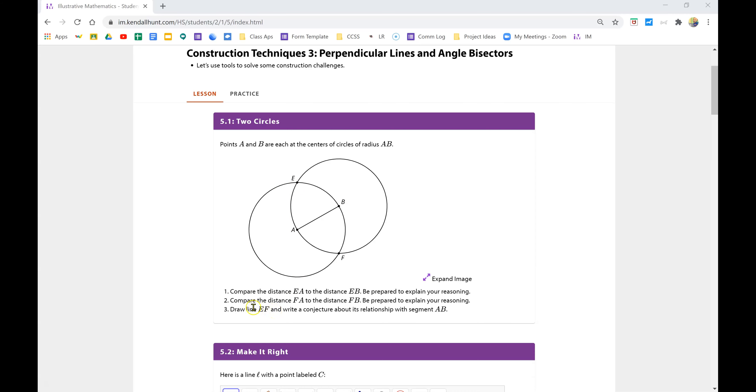So how do they compare? I'll leave that for you to answer. Same question number two: compare the distance FA to the distance FB. Very similar answer. And then draw the line EF and write a conjecture. If we draw the line EF, what does that do to the segment AB? How does it cross it and how does it split the line? That's a big hint.